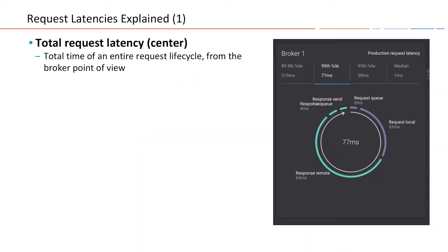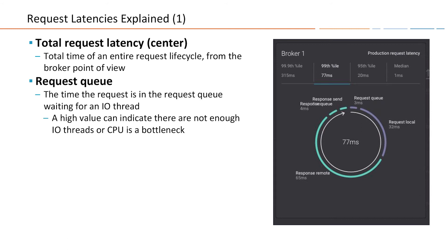The first section to look at is the request queue — the time spent in the queue while waiting for a thread in Kafka to handle this request. If this value is high, it usually means that there are not enough IO threads or not enough CPU to handle all requests coming into the Kafka broker.